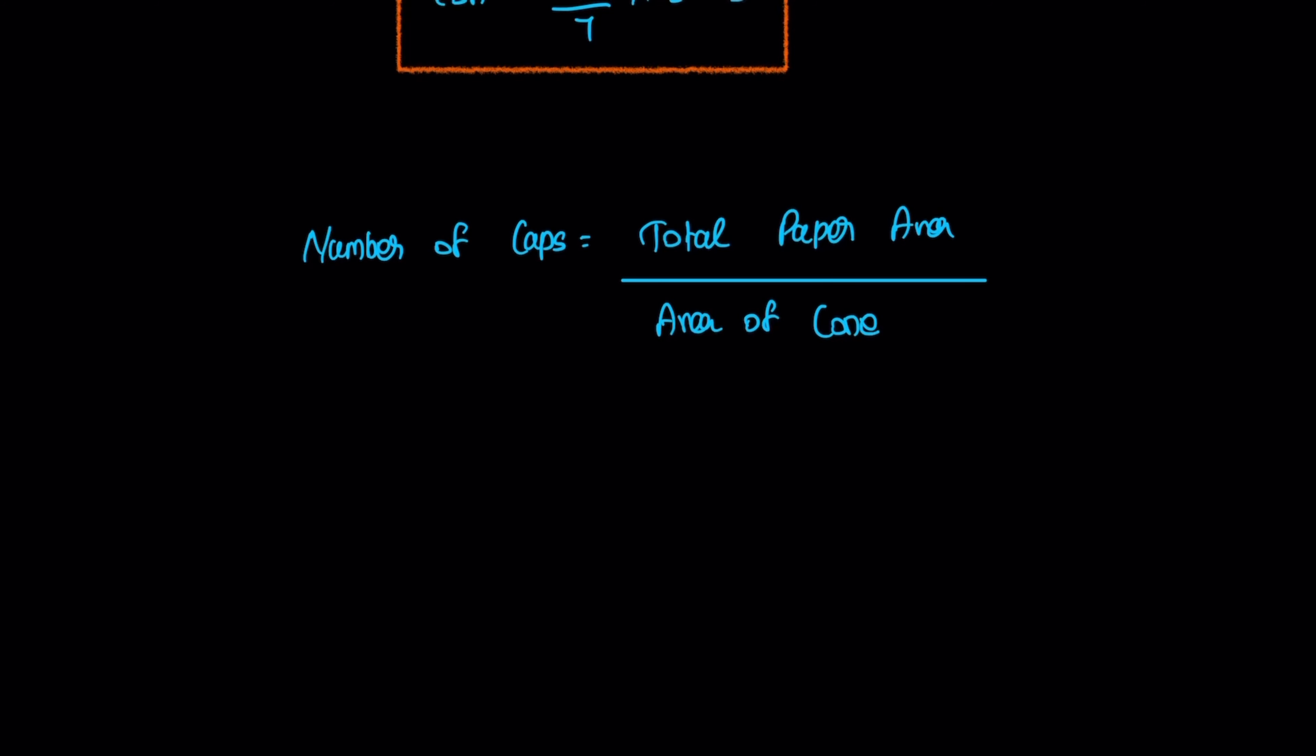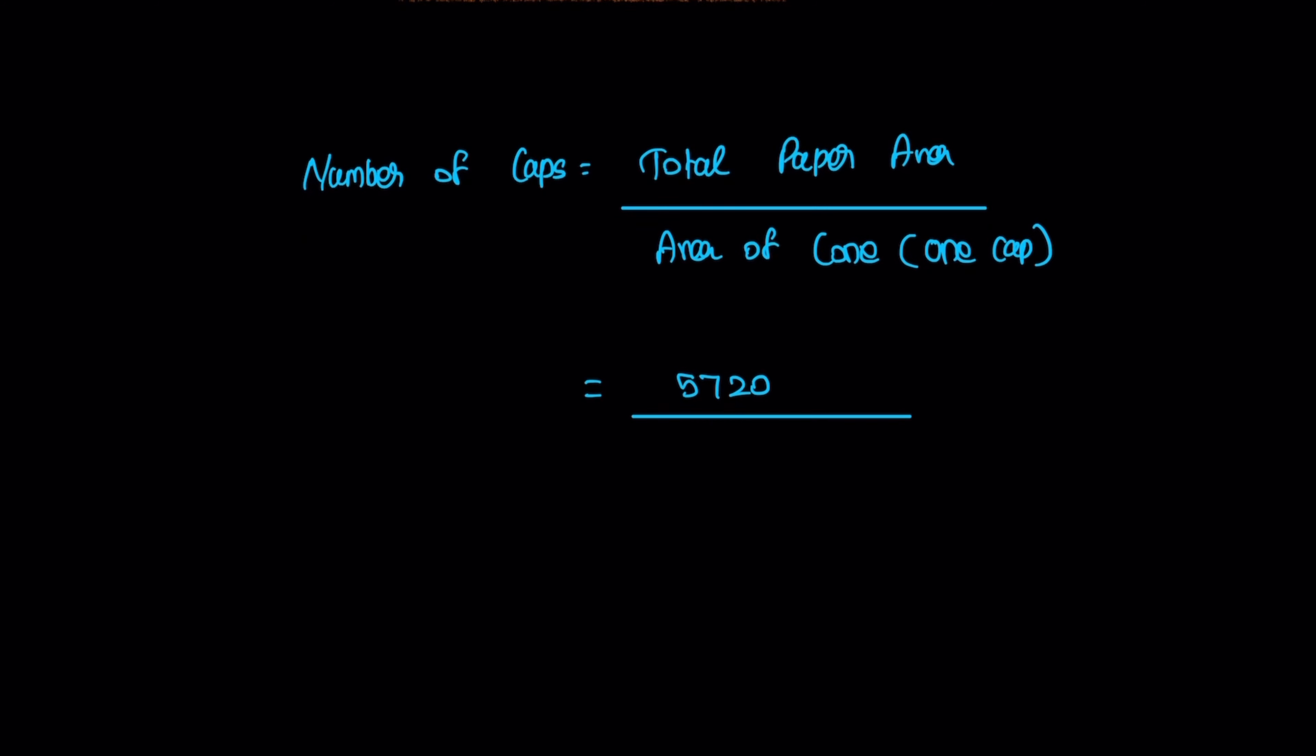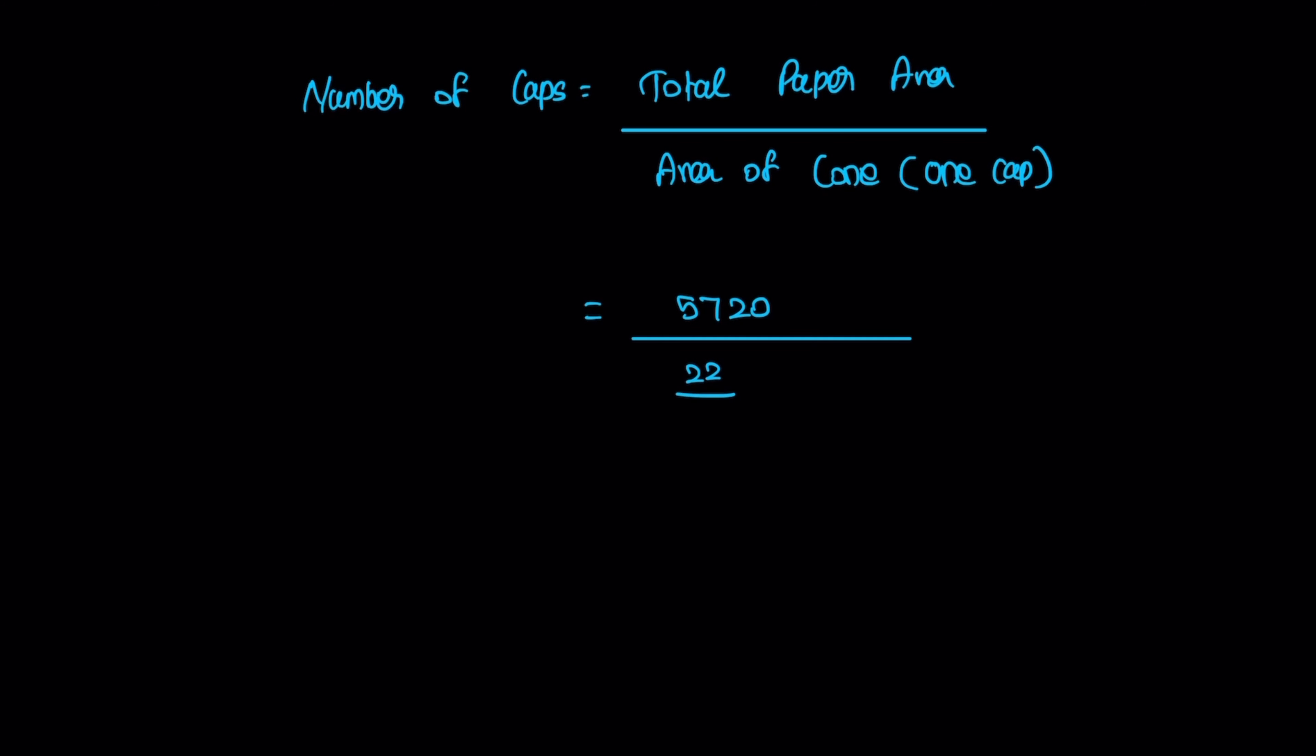Total number of caps equals total area, which is 5720, divided by one cone area. So 5720 divided by 22 divided by 7 times 5 times 13.